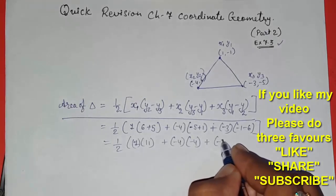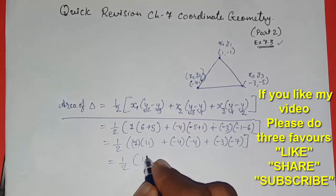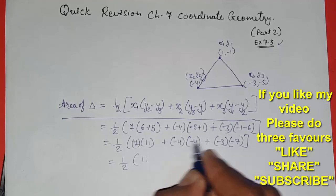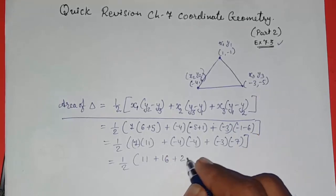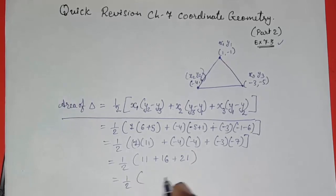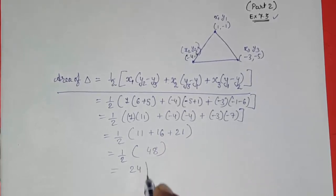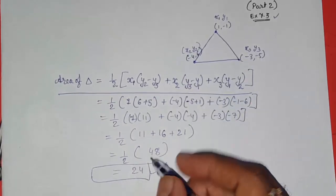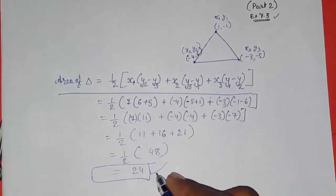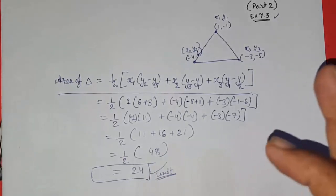Now we solve: 1 multiplied by (6 + 5) = 11; minus 4 multiplied by (-4) = +16; and minus 3 multiplied by (-7) = +21. Adding all these numbers: 11 + 16 + 21 = 48. Then half of 48 equals 24. So the area of this triangle will be 24 unit square — since no specific unit was given in the problem, we write unit square.